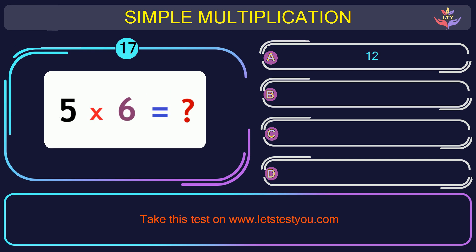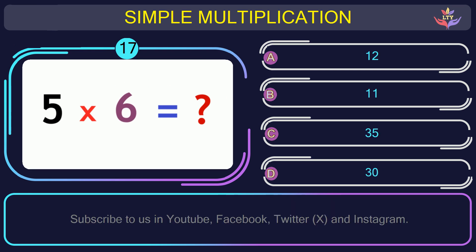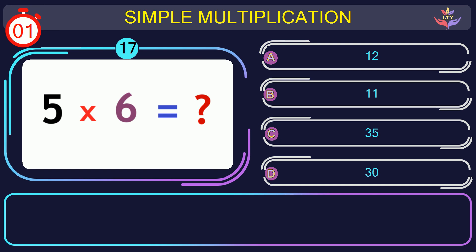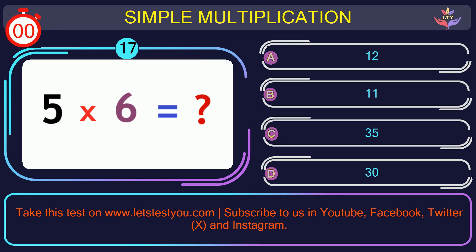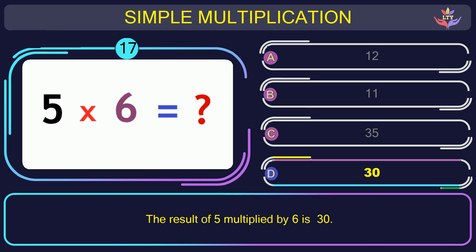Question number 17: find the result when you multiply 5 by 6. The correct answer is option D: 30. The result of 5 multiplied by 6 is 30.